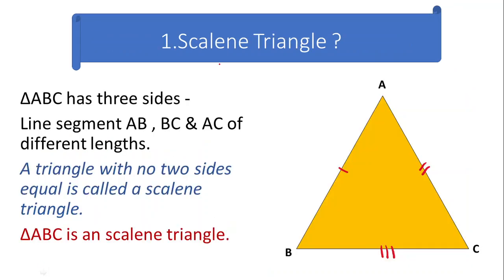The first one is the scalene triangle. In a scalene triangle, all sides have different measures — that is, no two sides from the triangle will have the same length. For example, in triangle ABC, all the sides will be of different measurement: AB is 3 cm, BC is 4 cm, and AC is 5 cm. Each side of the triangle has a different length, represented by different symbols.